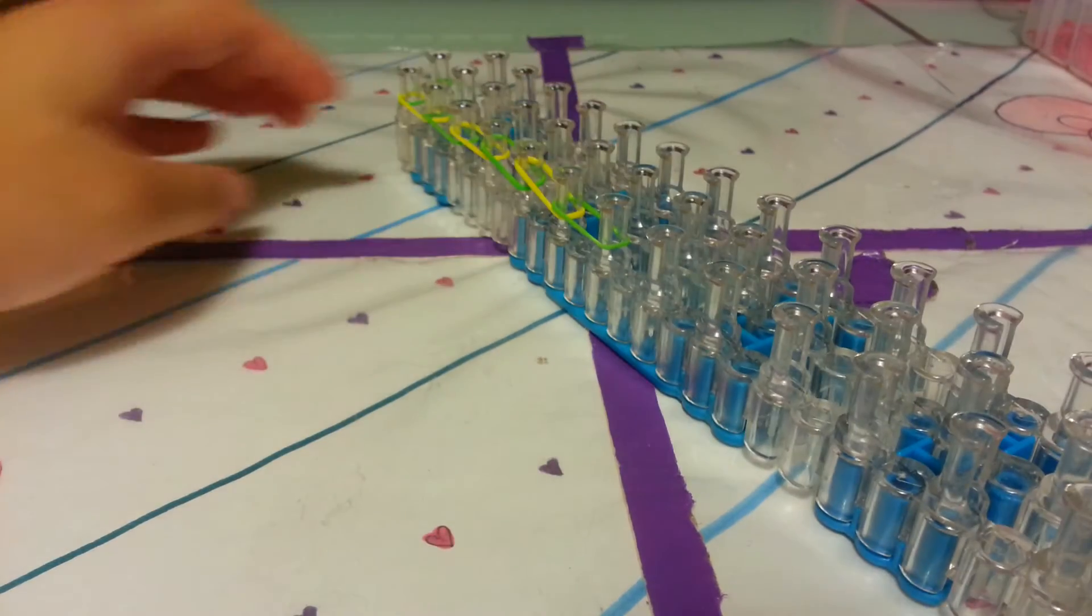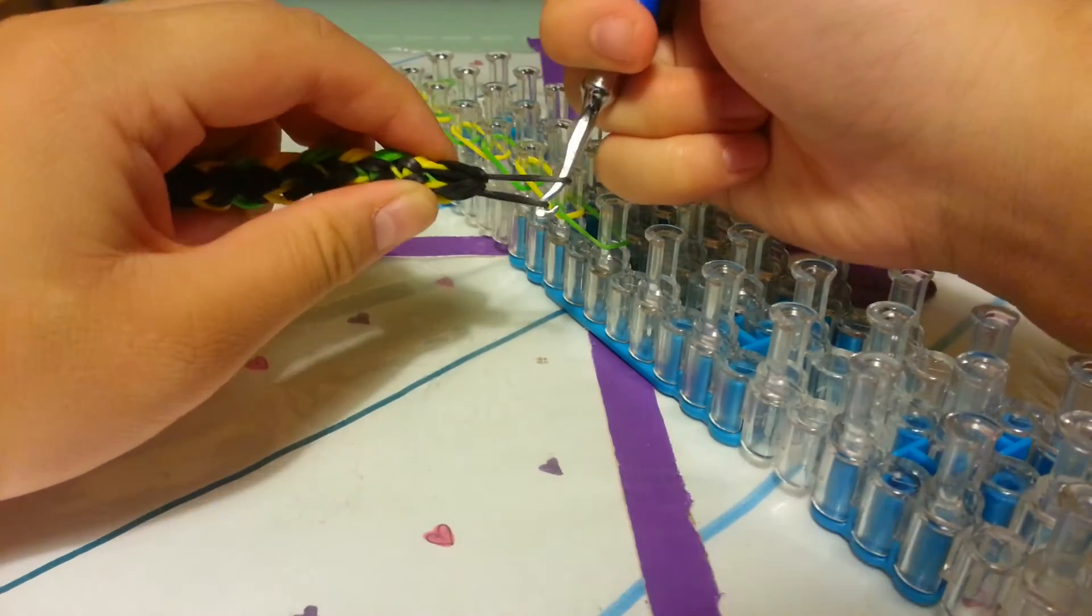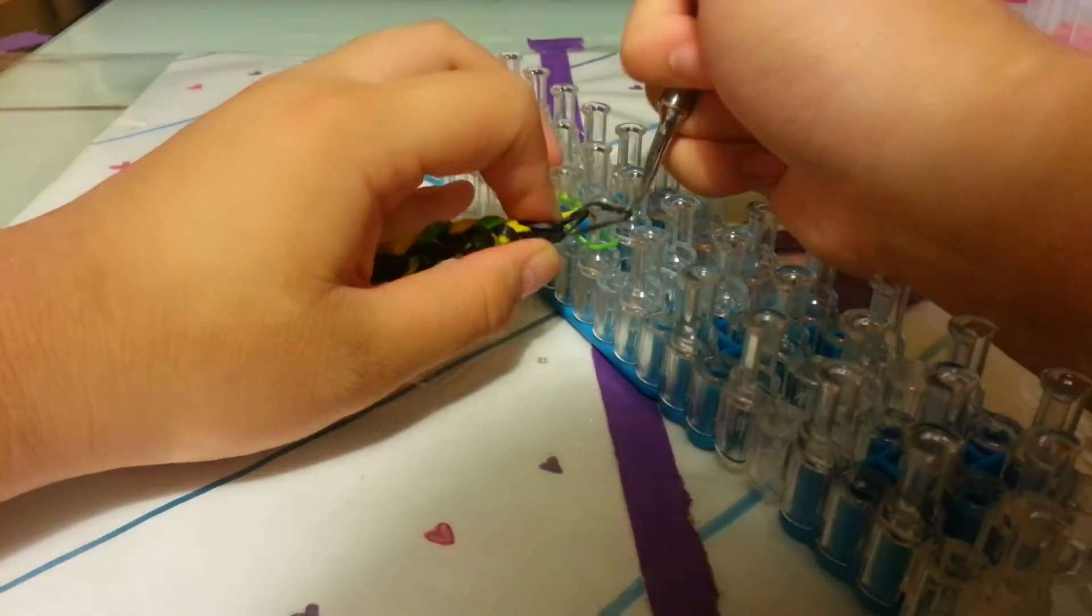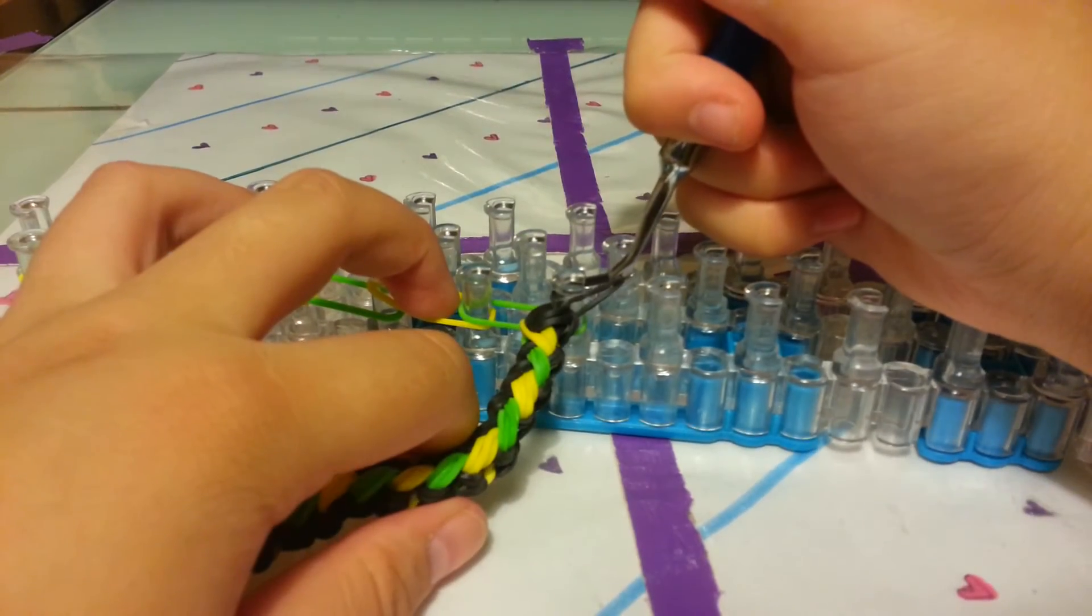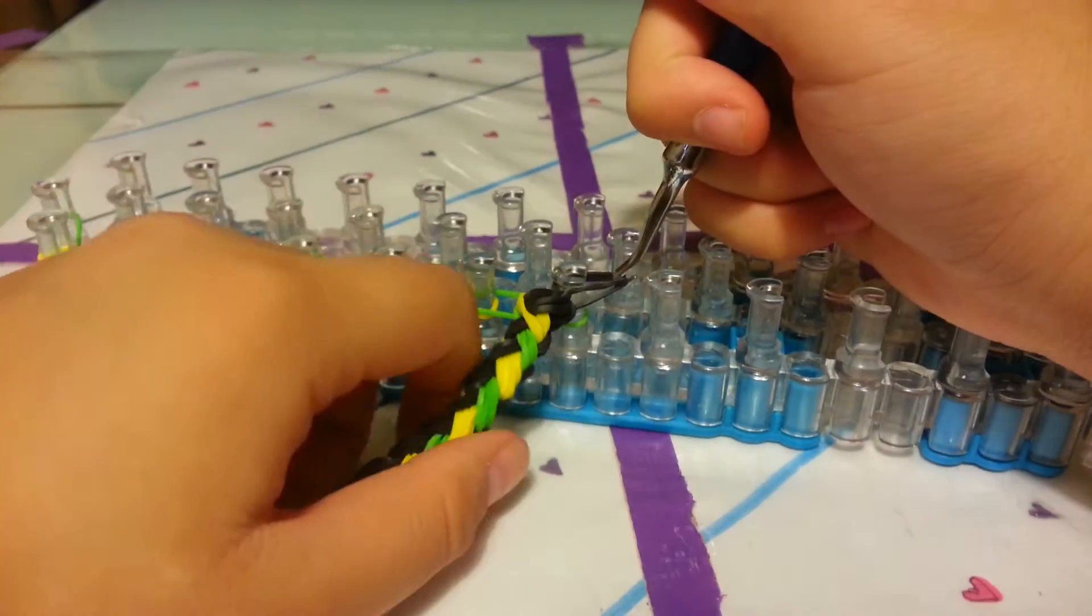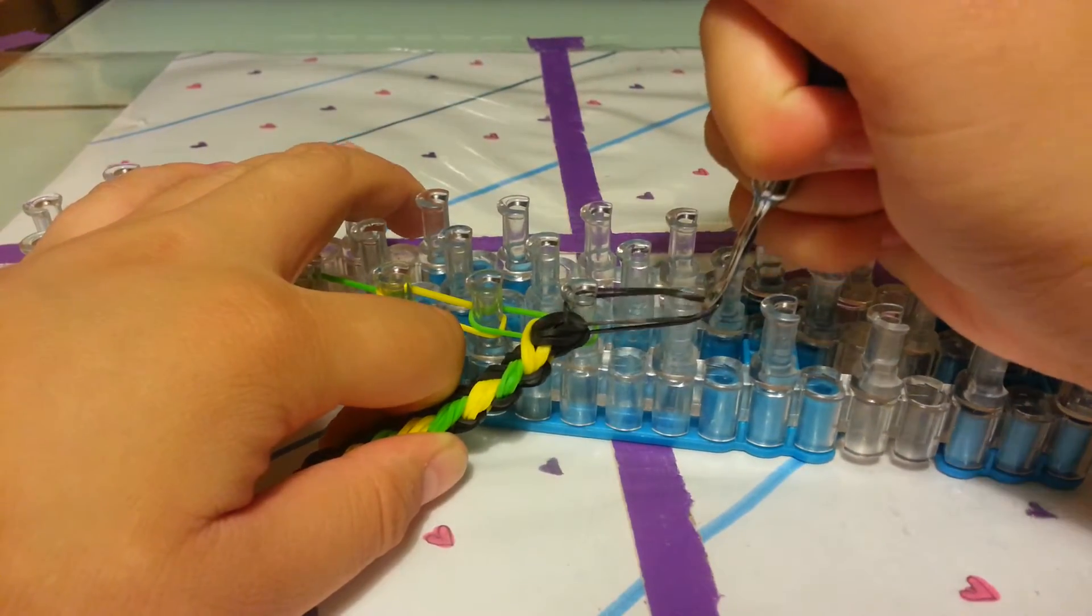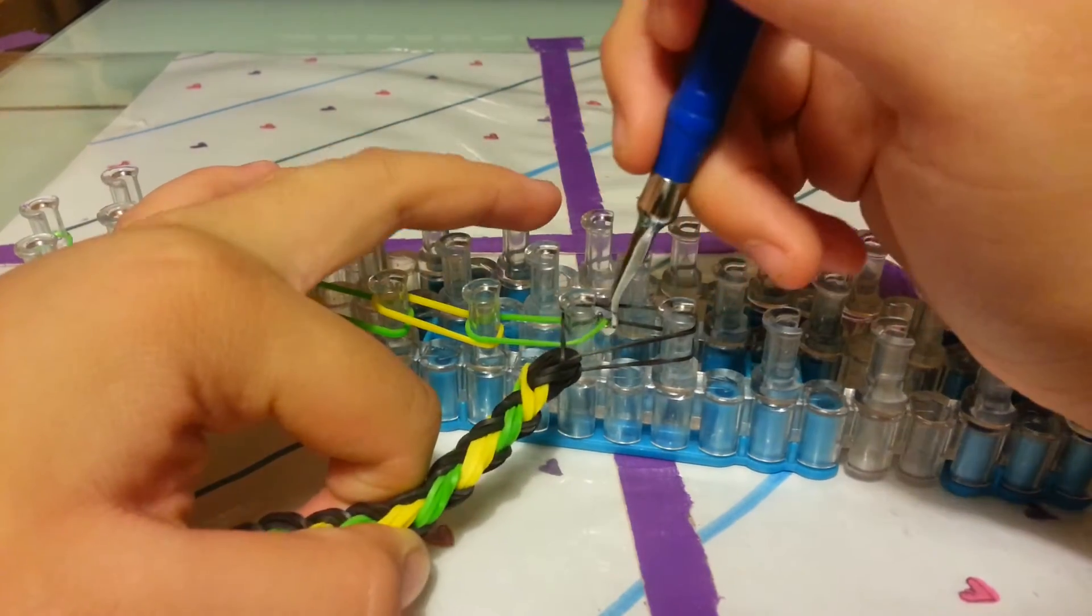Turn our loom around. I'm going to get whatever is on my hook - it should be these two bands right here - and place it on this peg. You'll pull it to this peg if you like, and this will be our cap band.